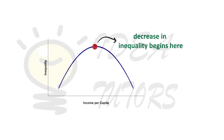This economic inequality is expected to decrease when a certain level of average income is reached. It is at this point in economic development that society is meant to benefit from the trickle-down effect and an increase in per capita income that effectively decreases economic inequality.